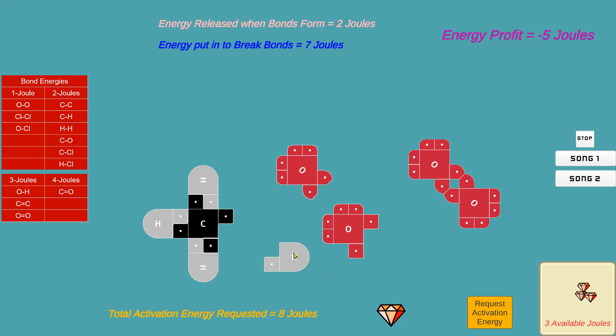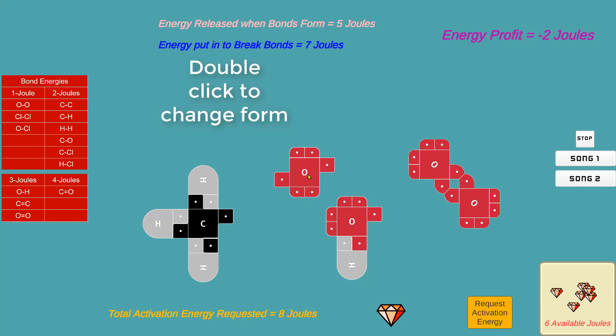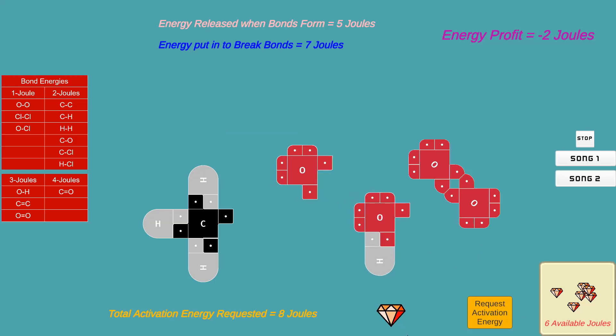A right click will rotate the atom. A double click will change its form. There are three forms of oxygen and they just cycle. So click it until you say, that's the form I wanted. So now I can make an H2O. Boom, there we go.